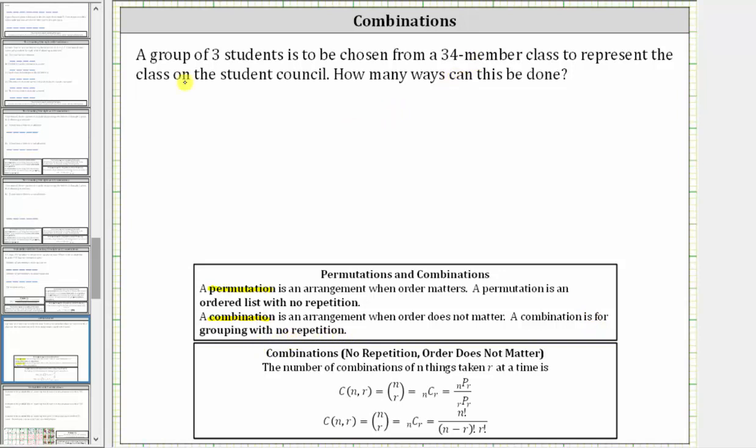Because we are selecting groups of three students, order does not matter. If we change the order of the students, it does not change the group, which means we have a combination.